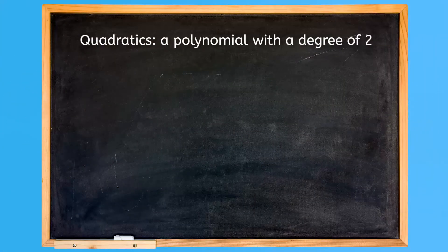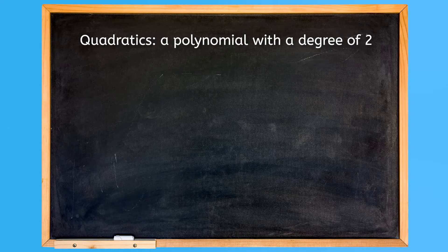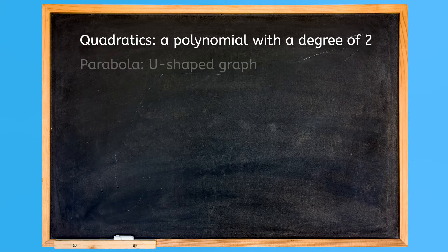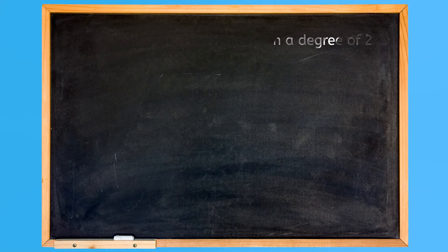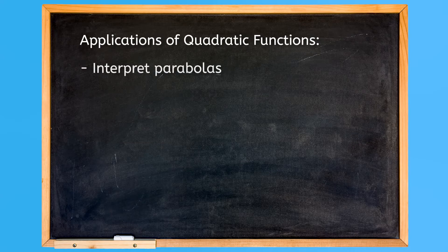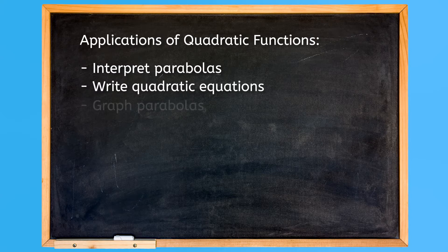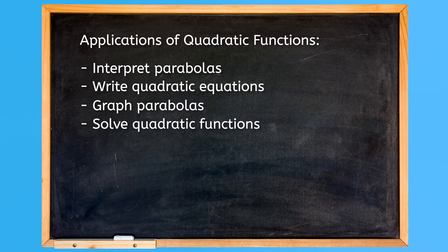You may remember from our last unit that quadratics are a specific type of polynomial with a degree of 2. These equations are graphed in a shape called a parabola or a u-shape. Quadratics are a big deal because there are so many applications and lots of ways to work with them. In our quadratics unit we'll learn to interpret parabolas when looking at a graph, write quadratic equations in a variety of forms, graph parabolas, and solve quadratic functions by calculating for the vertex, roots, and other important points.